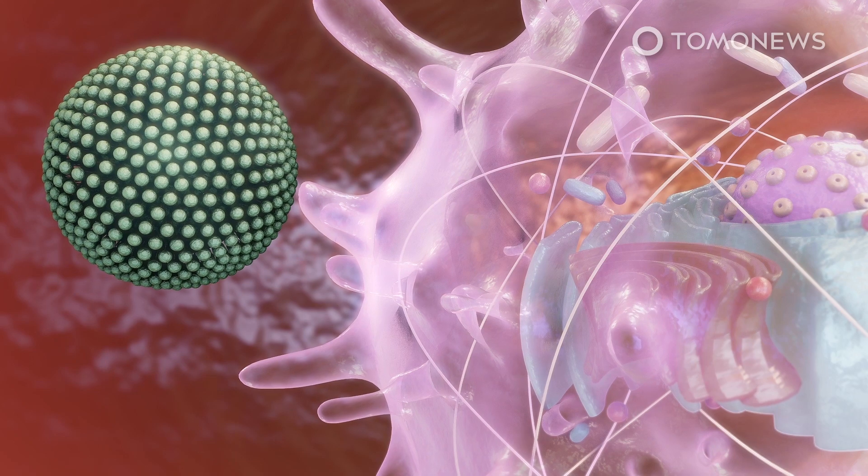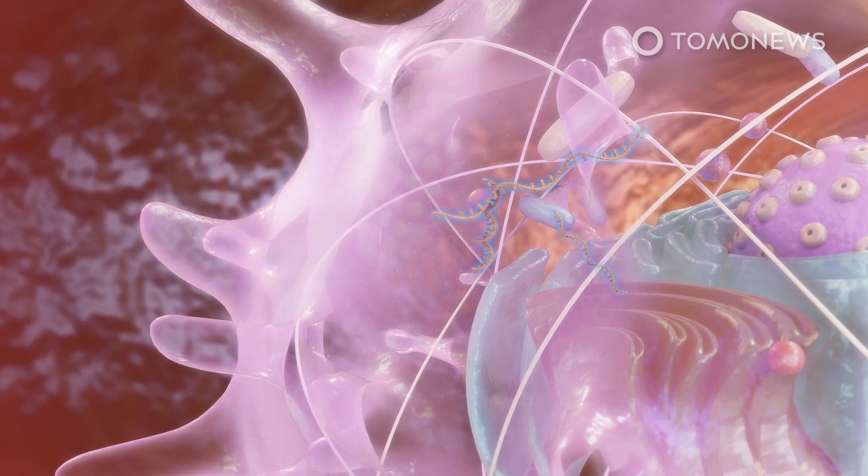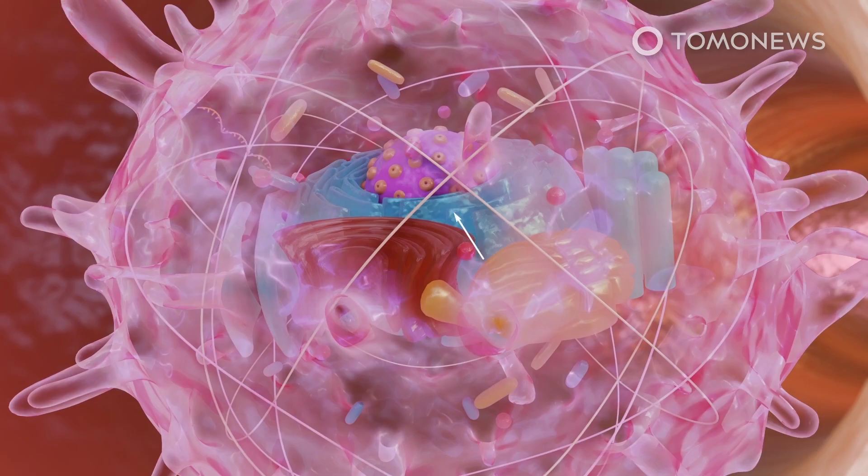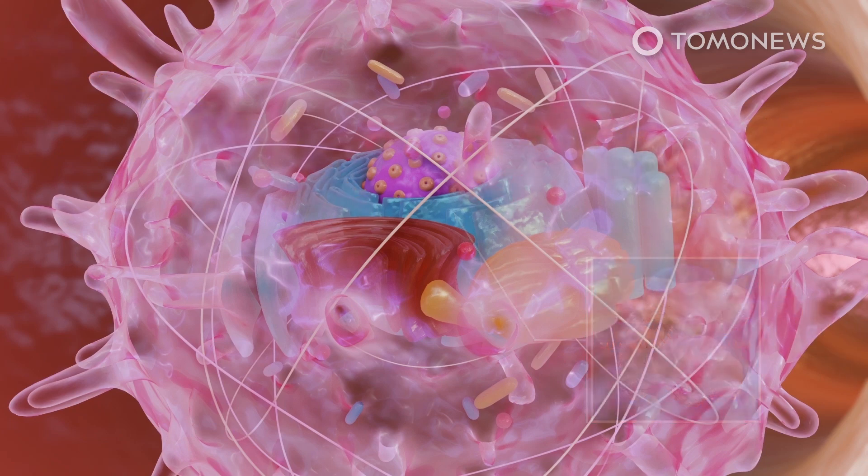The lipid nanoparticle carrier transfers the mRNA and its copies of genetic instructions to the cytoplasm of a cell, where the ribosomes are found. Once inside the cell, the mRNA instructs the ribosomes to produce the coronavirus' spike protein.